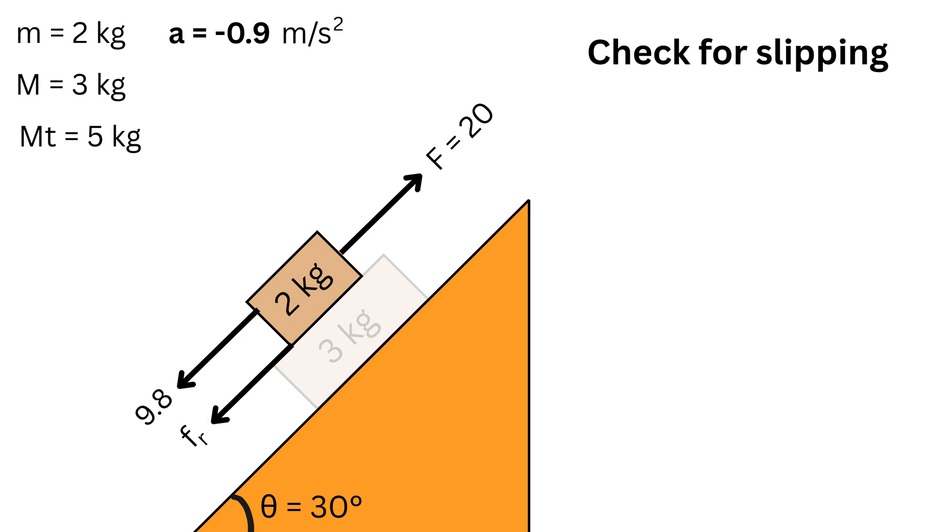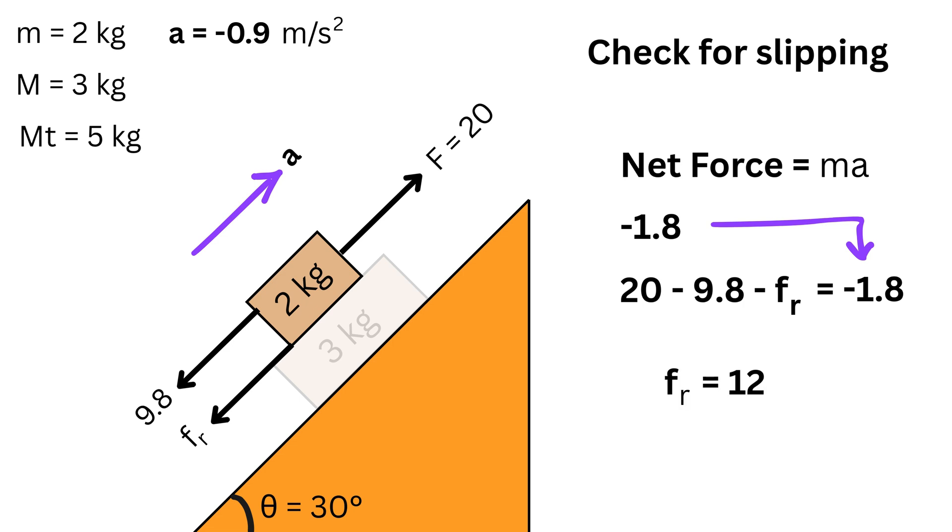If the small block moves at the common acceleration A, its net force must be its m times A, or 2 times minus 0.9, which is minus 1.8 Newtons. So F, or 20 minus gravity pull down, or 9.8 minus the required friction f_R, must equal the net force, or minus 1.8. Solving for f_R gives us 12 Newtons.